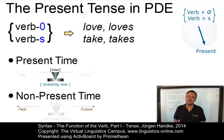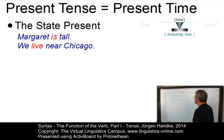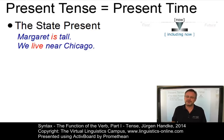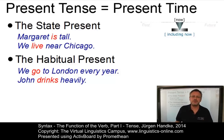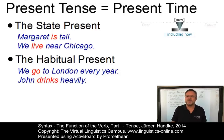The simple present tense covers three different kinds of present time use. The first is the state present, as in 'Margaret is tall' or 'we live near Chicago.' The state present is used with stative verb senses to refer to a single, unbroken state of affairs which has existed in the past, exists in the present, and is likely to continue into the future. The habitual present, as in 'we go to London every year' or 'John drinks heavily,' is used with dynamic verb senses to refer to events that repeatedly occur without limitation in the past or the future — for example, 'John drinks heavily' simply means John is an alcoholic who drinks all the time.